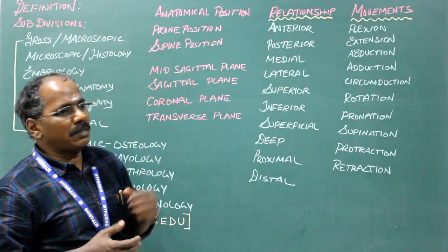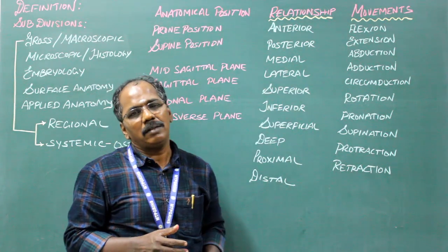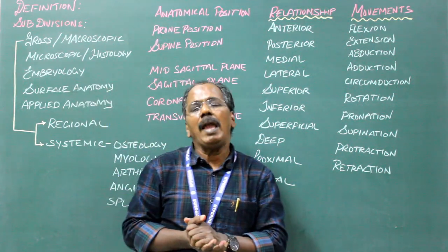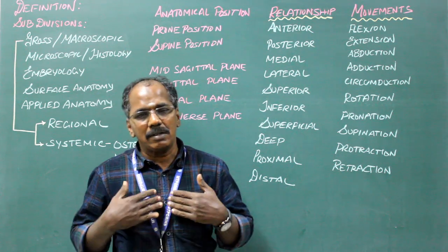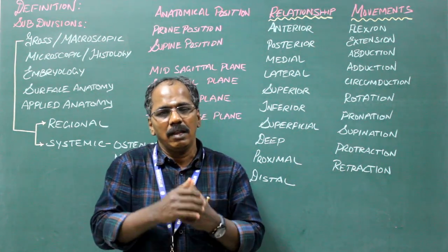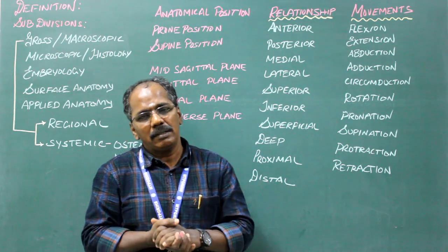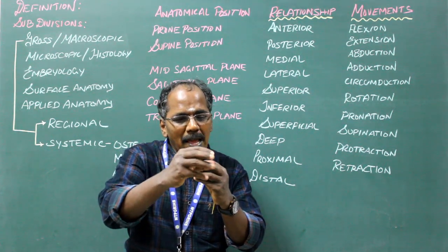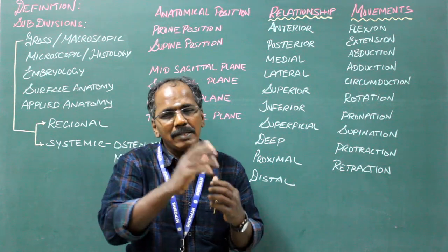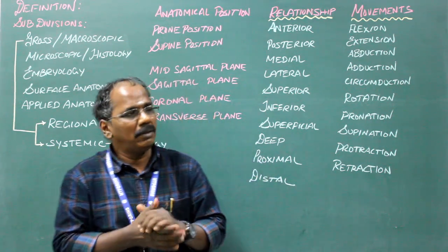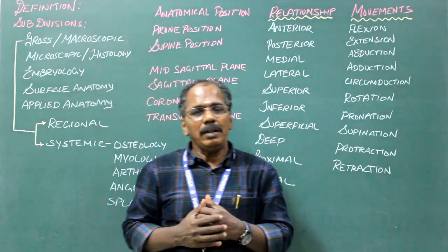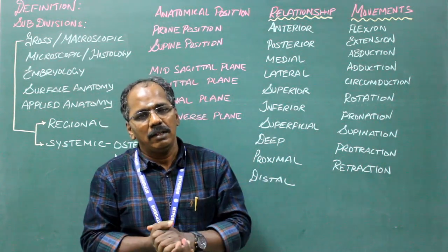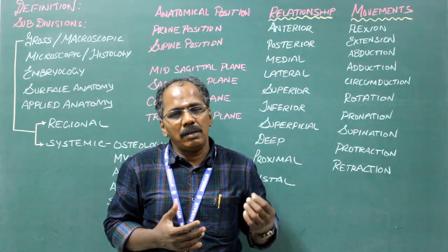Terms of relationship — these are the terms used in anatomy. Anterior means towards the front; any structure lying in front is known as anterior. Posterior means towards the back. Medial means towards the midline; anything lying close to the midline is known as medial. Lateral means structures which are away from the midline.